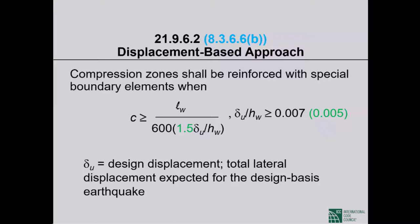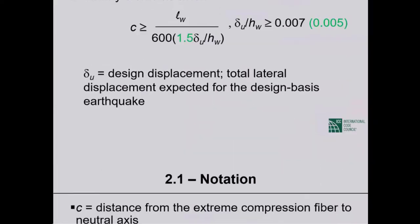The ACI 318-14 modification (adding a 1.5 factor in the denominator, requiring more shear walls to have specially detailed boundary elements) is presented for awareness only — it is not your code, and there will be ample time to explain it before it becomes relevant. For now, proceed without the 1.5 factor.